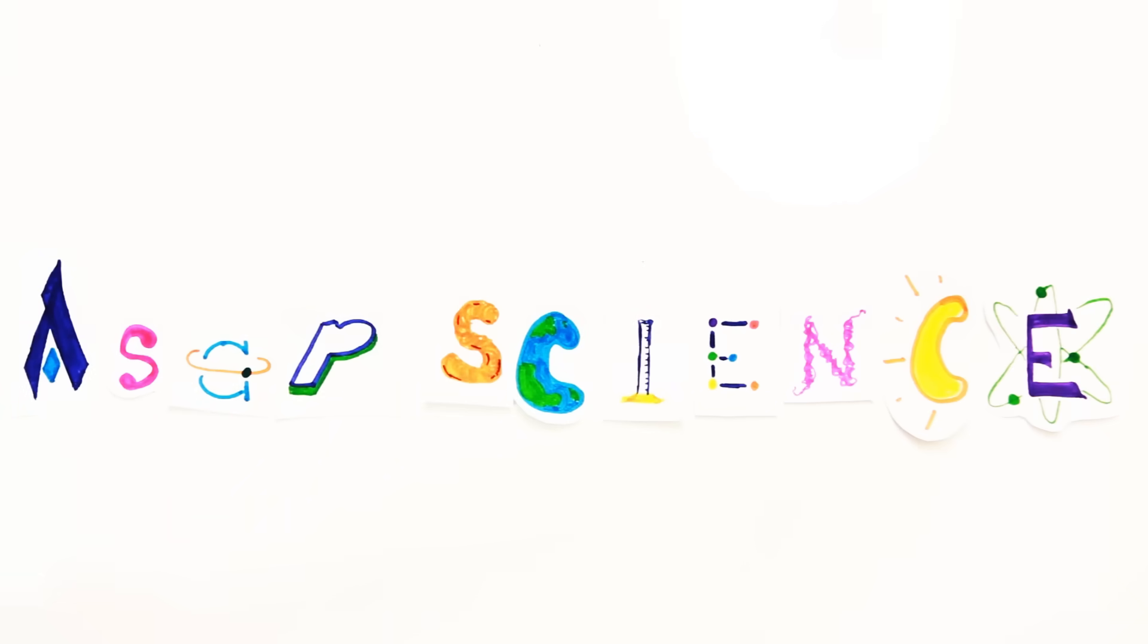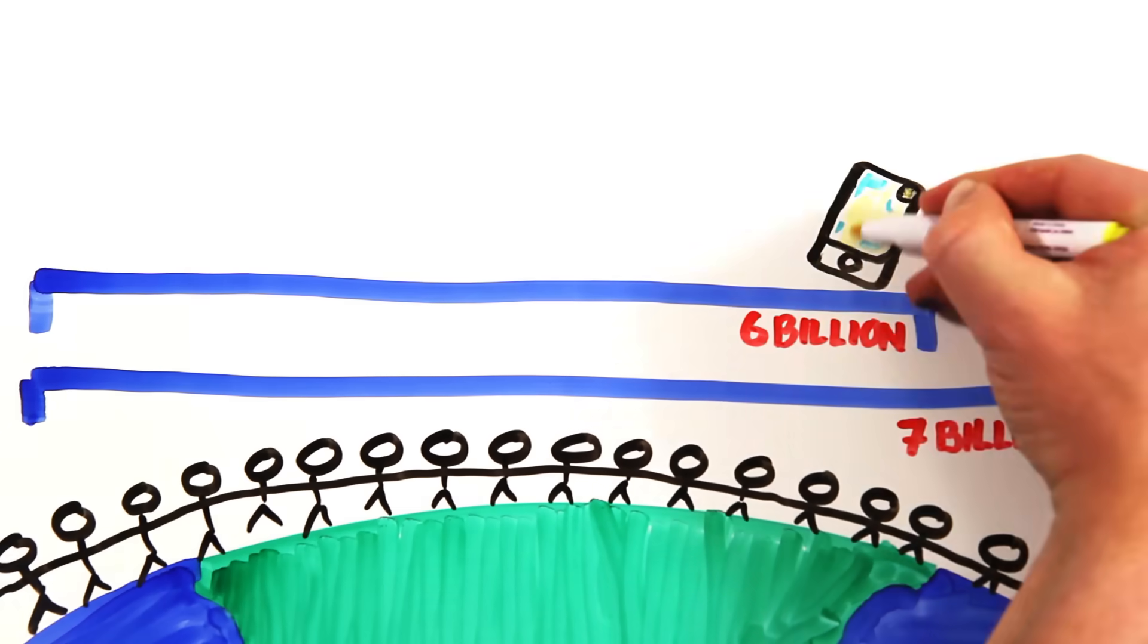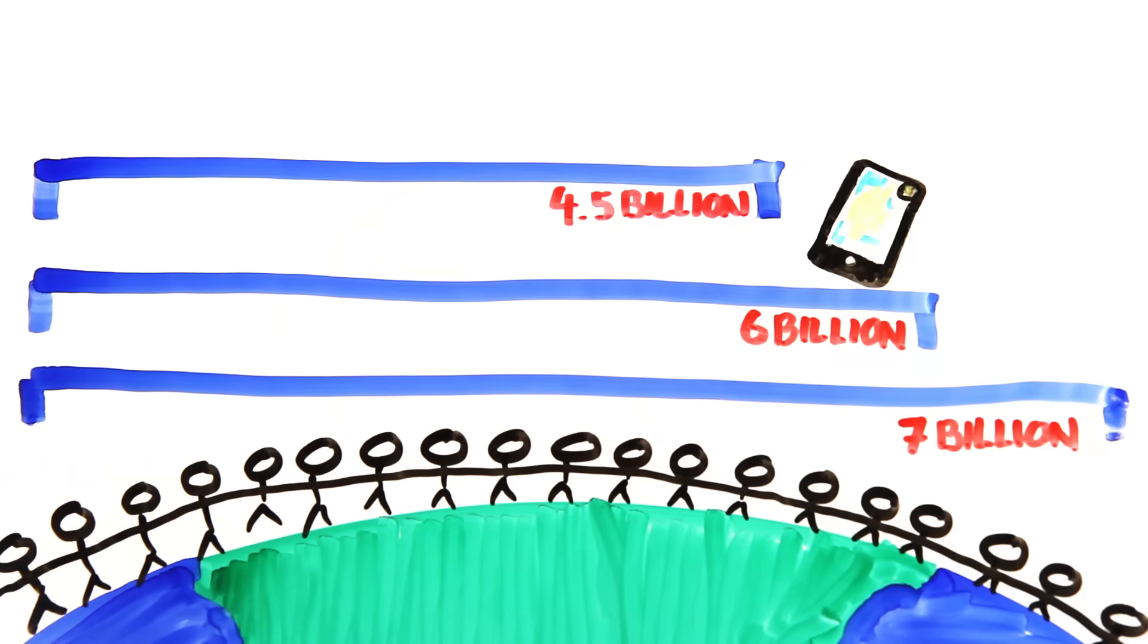Of the 7 billion people on Earth, roughly 6 billion own a cell phone, which is pretty shocking given that only 4.5 billion have access to a working toilet.